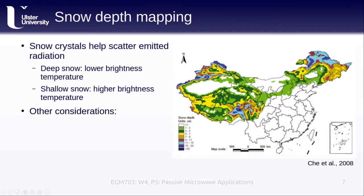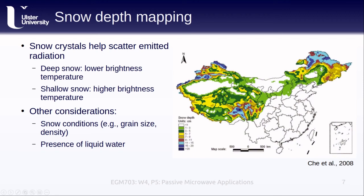To accurately map snow depths using these datasets, we need to first consider the snow conditions — for example, the grain size and density — which will also affect the brightness temperature measured by the sensor. The presence of liquid water also has a strong impact, as wet snow emits very differently from dry snow, making it more difficult to estimate snow depth. We also need to consider vegetation cover, and finally precipitation, because it shows a similar scattering signature to snow in certain frequency bands.